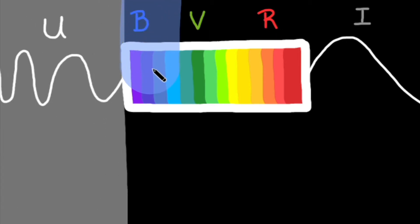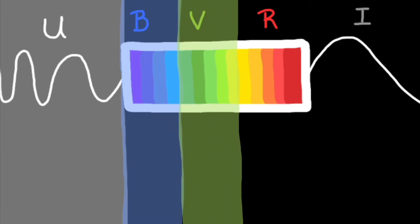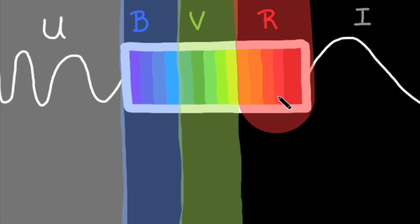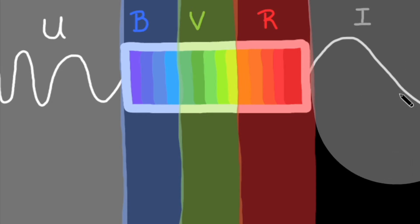U, ultraviolet, B, blue, V, verde, the Spanish word for green, R, red, and I, infrared.